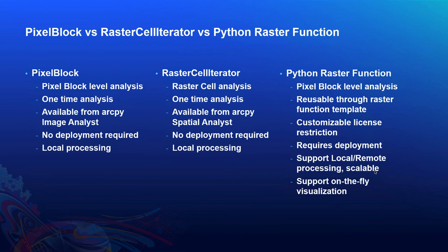Python raster function provides a flexible way to write pixel block-level analysis and image processing. Because it is a raster function, you can use it alongside other ArcGIS built-in system raster functions within a raster function template. The code is reusable, you can customize license restrictions, and you can deploy it to server to support both local and remote processing at scale. Because it's a raster function, it also supports on-the-fly visualization of processing results.